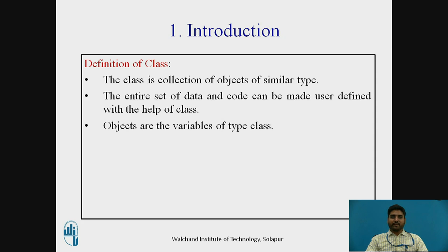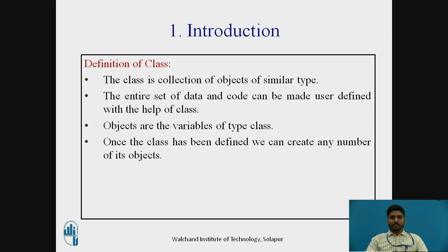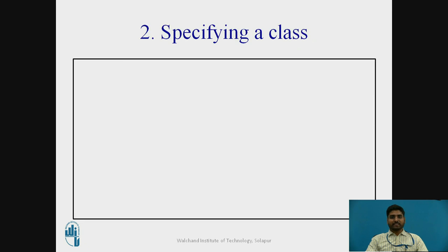Objects are the variables of type class. Once the class has been defined, we can create any number of its objects. We will see the examples in the next slides, specifying a class.